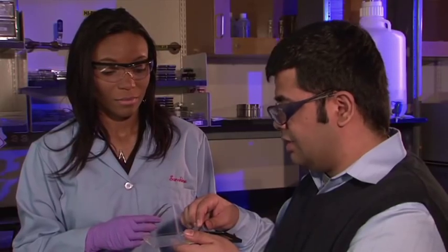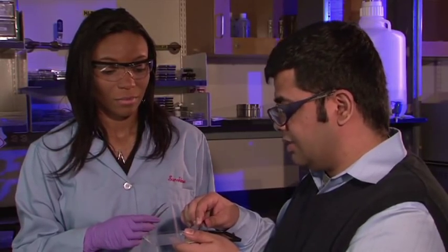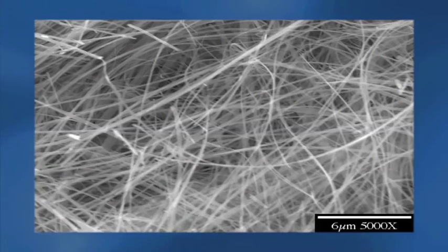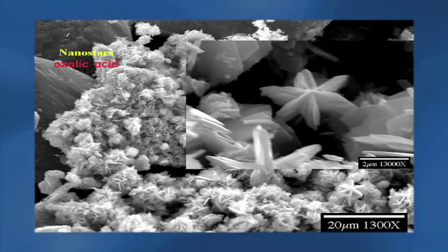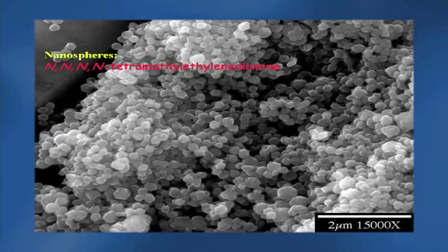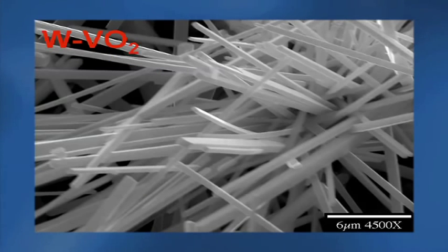After the hydrothermal process is done, we have different nanostructures with varying morphologies and dimensions such as wires, stars, fibers, and belts, depending on what we add inside the hydrothermal reaction vessel.